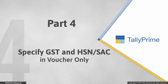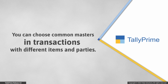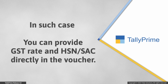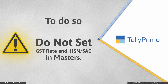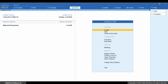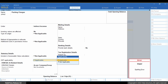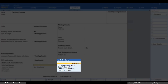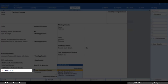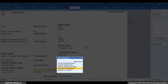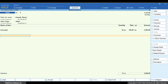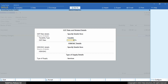Now let us see how to ensure that the GST and HSN or SAC related details are specified directly in the voucher. You can use Common Masters for Sales, Purchase, and Stock Item, meaning you will choose the same masters in transactions involving different types of items and parties. In such a case, you can provide the GST Rate and HSN or SAC related details directly during voucher creation. Do not set Rate and HSN or SAC in these masters in order to enter them during voucher creation. To create a ledger for services, enter the name. Under HSN or SAC details, select Show More, then 'Specify in Voucher.' Similarly for GST Rate Details, select Show More, then 'Specify in Voucher.' Press Ctrl+A to save. In the voucher with this ledger, you will need to specify the GST Rate and HSN or SAC details manually.